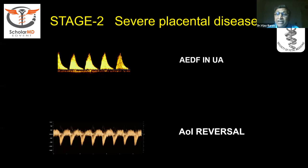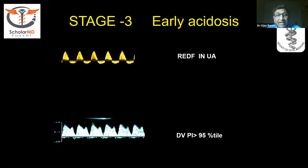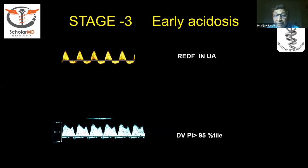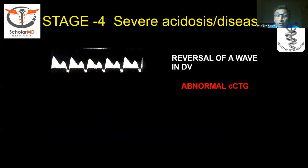For Stage 2, there may be absent end-diastolic flow in the umbilical artery, or aortic isthmus reversal. Stage 3 involves reversal of end-diastolic flow in the umbilical artery, or ductus venosus PI increasing to more than the 95th percentile. If you do not do ductus regularly, this is very difficult to pick up. Even in every normal baby, do the ductus at different stages of gestation so you master the normal and can detect small variations between 85th and 95th percentile to intervene at the right time. Stage 4 is severe acidosis with reversal of the ductal waveform and may be associated with an abnormal CTG.